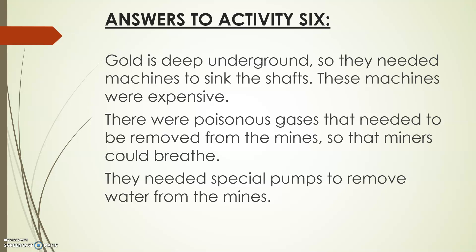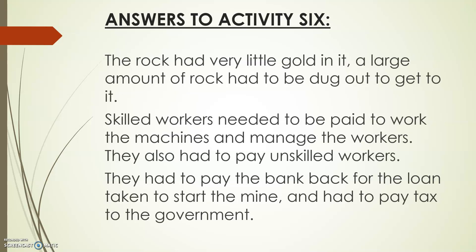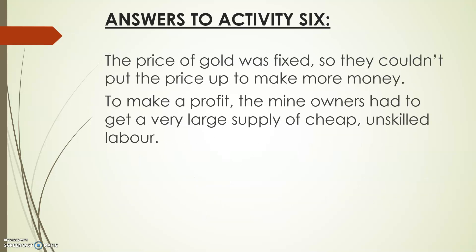So this would have been your answer to Activity 6. Gold is deep underground, so they needed machines to sink the shafts — these machines were expensive. There were poisonous gases that needed to be removed from the mines so miners could breathe. They needed special pumps to remove water from the mines. The rock had very little gold in it, so a large amount of rock had to be dug out. Skilled workers needed to be paid to work the machines and manage the workers. They also had to pay unskilled workers, repay the bank for the loan taken to start the mine, and pay tax to the government. The price of gold was fixed, so they couldn't put the price up to make more money.